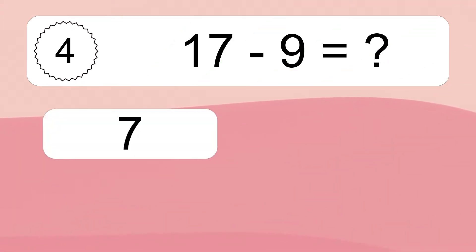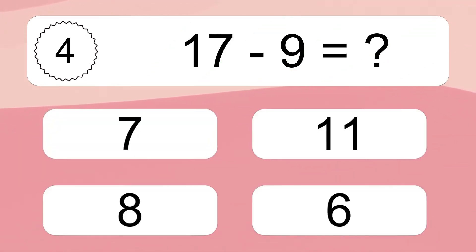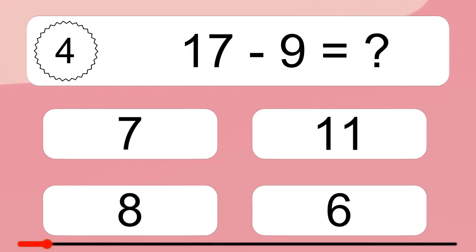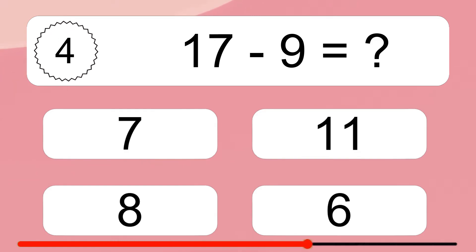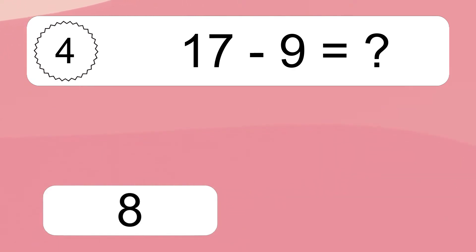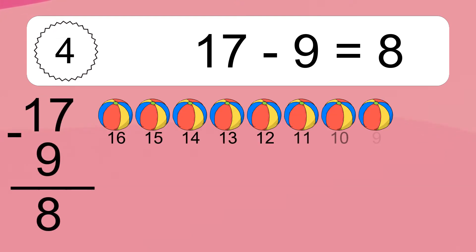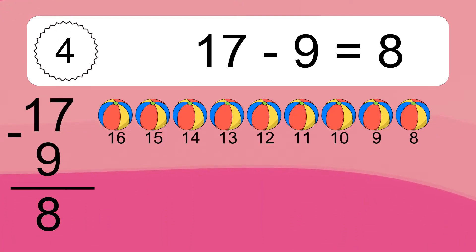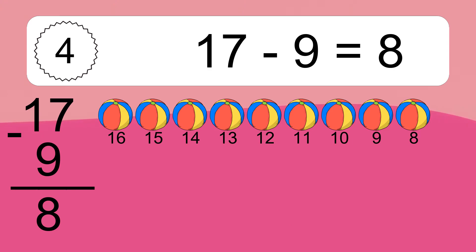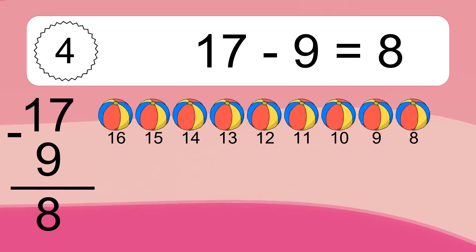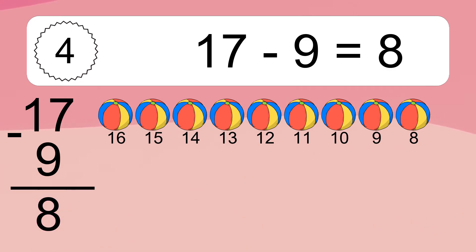17 minus 9 equals what? 17 minus 9 equals 8. Let's count it: 16, 15, 14, 13, 12, 11, 10, 9, 8.